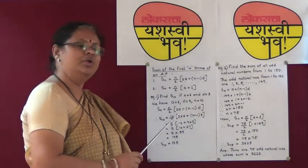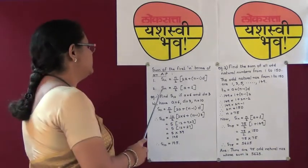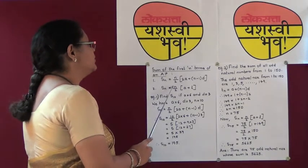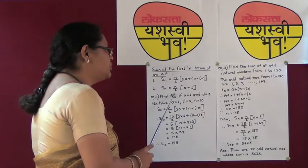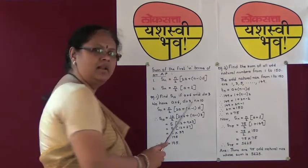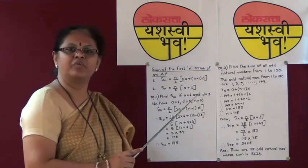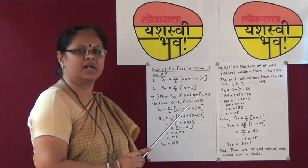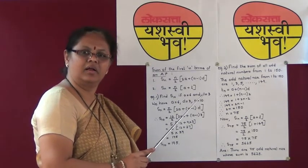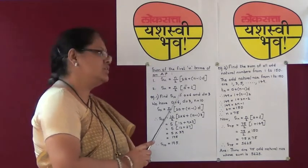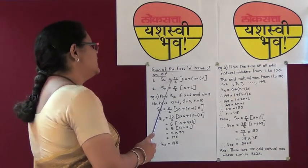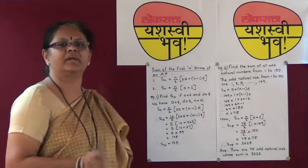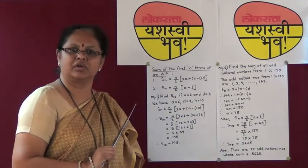The sum of N terms is given by two formulas. The first formula states: SN equals N upon 2 times (2A plus (N minus 1) D), where A is the first term, N is the number of terms, and D is the common difference. Or you can use SN equals N upon 2 times (A plus L), where L is the last term.